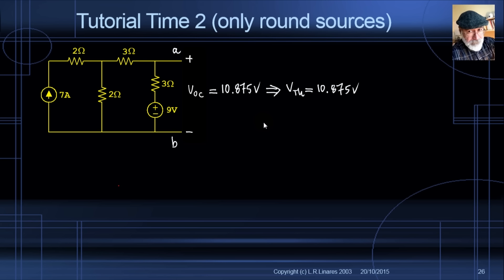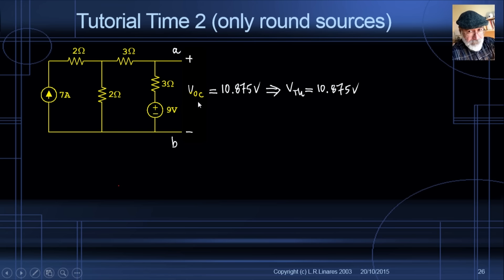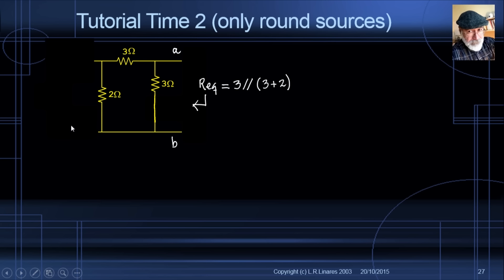For R_TH, since the circuit has only independent sources, we kill them: the 7-amp source becomes an open circuit, the 9-volt source becomes a short circuit. There is no current in the 2-ohm resistor, so we can remove it. The equivalent resistance at port AB is 3 ohms in parallel with (3 + 2) = 3 parallel 5 = 1.875 ohms. That is the Thevenin resistance.